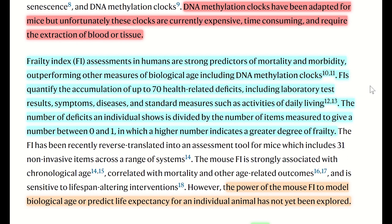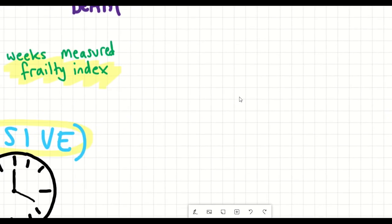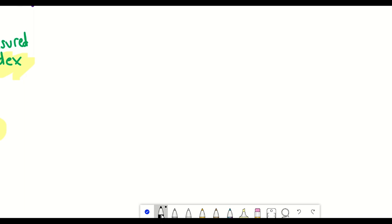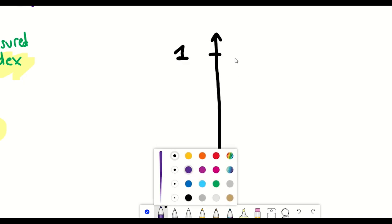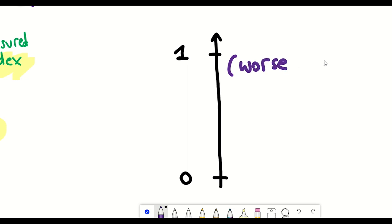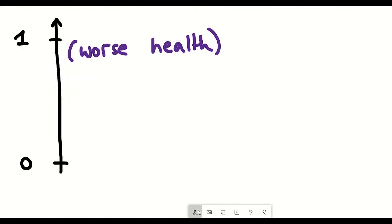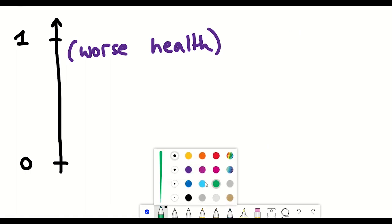And so it may include factors such as hearing loss and gait disorders. And so once these different health-related deficits are assessed, you end up with a number between 0 and 1, with the higher the number indicating a greater degree of frailty. So as we saw with the alpha-ketoglutarate study, frailty index can be used as an indicator of how effective different interventions are in terms of improving healthspan.